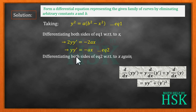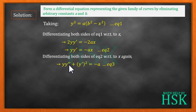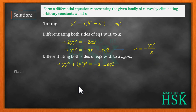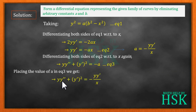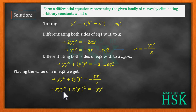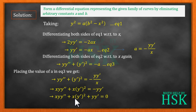So the right-hand side becomes −a. From equation two, a = −y·y'/x. Substituting this value of a into equation three gives y·y'' + (y')² = −(−y·y'/x) = y·y'/x. Cross-multiplying by x: x·y·y'' + x·(y')² = y·y'. Bringing all terms to the left: x·y·y'' + x·(y')² + y·y' = 0.